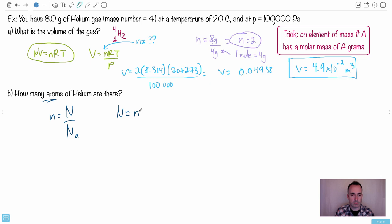Remember that from before: N is the number of atoms. So because of that, I just get N equals little n, the number of moles, times Avogadro's number. So the number of moles, remember we found was 2, and I get Avogadro's number was 6.02 times 10 to the 23.